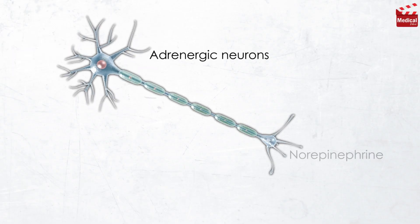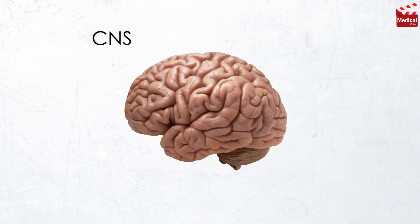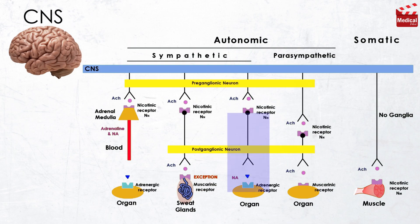Adrenergic neurons release norepinephrine as the primary neurotransmitter, also known as noradrenaline. These neurons are found in the central nervous system and also in the sympathetic nervous system, where they serve as links between ganglia and the effector organs.